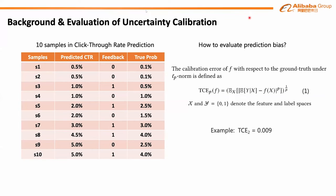To better understand some basic concepts of uncertainty calibration, let's look at how to measure the gap between predictions and true probabilities. We can define an error with the true probabilities, such as equation 1, which is named TCE — short for True Calibration Error — in previous works. Unfortunately, the true probability is unavailable in practice, so people usually use ECE to evaluate the calibration error approximately.